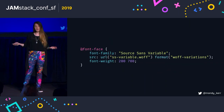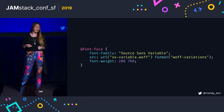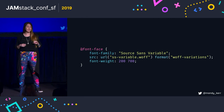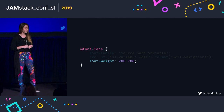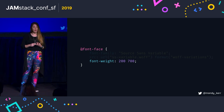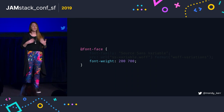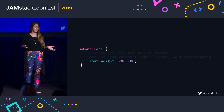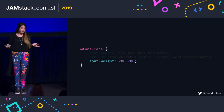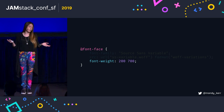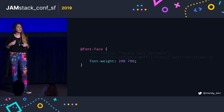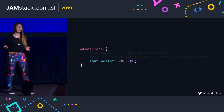We still use @font-face just like we do now — it's pretty much the same. The main difference is how we define variations for descriptors like font-weight, font-stretch, and font-style. At the moment, if you were to define two different font weights, you'd have a @font-face block for the regular version and then another @font-face block for bold, and you'd keep doing this until you had all the different styles you needed.